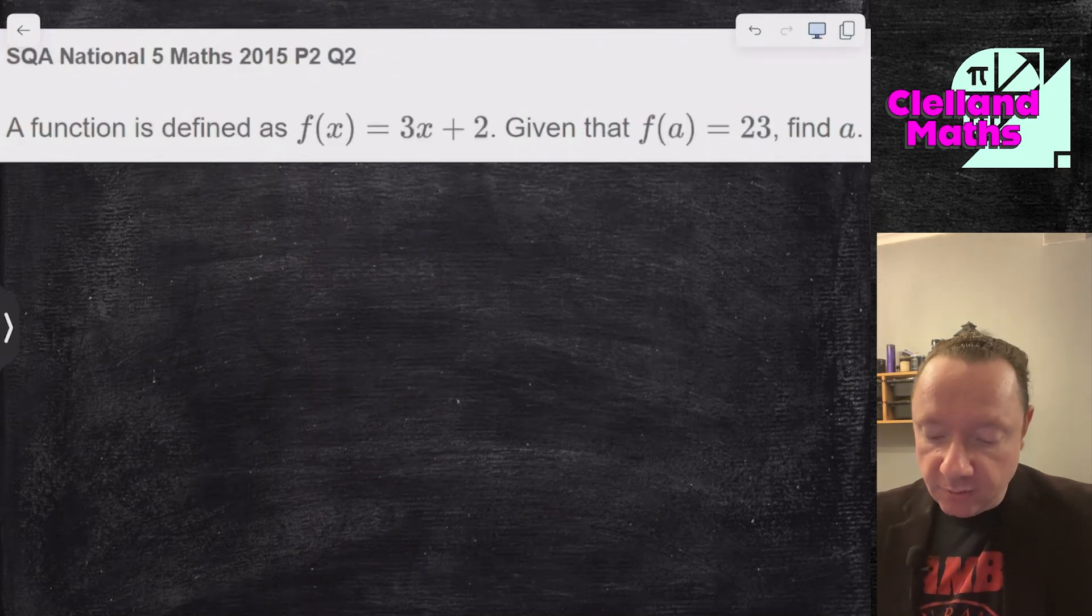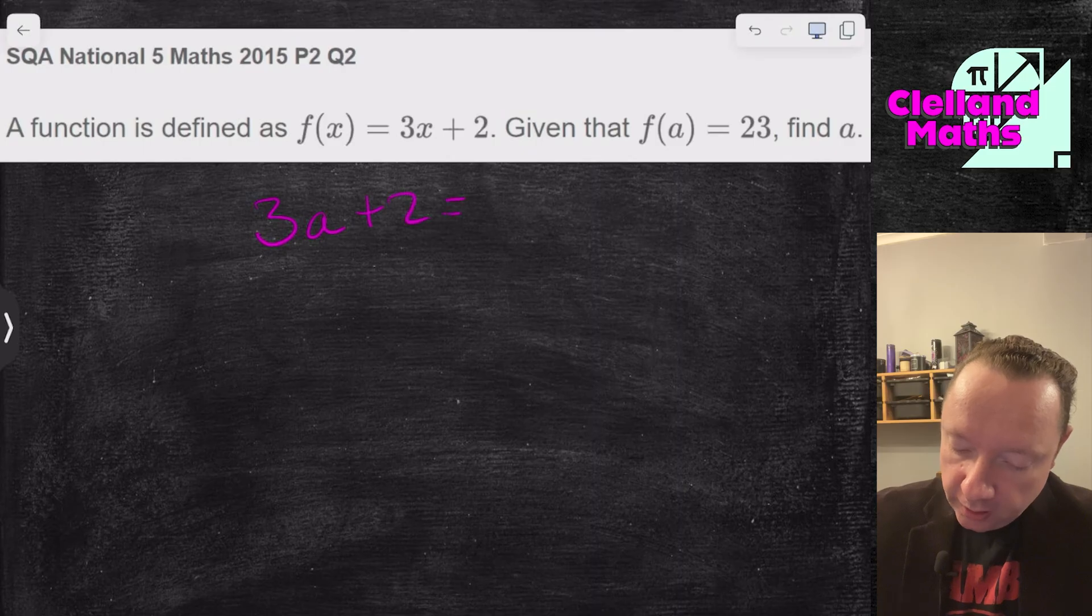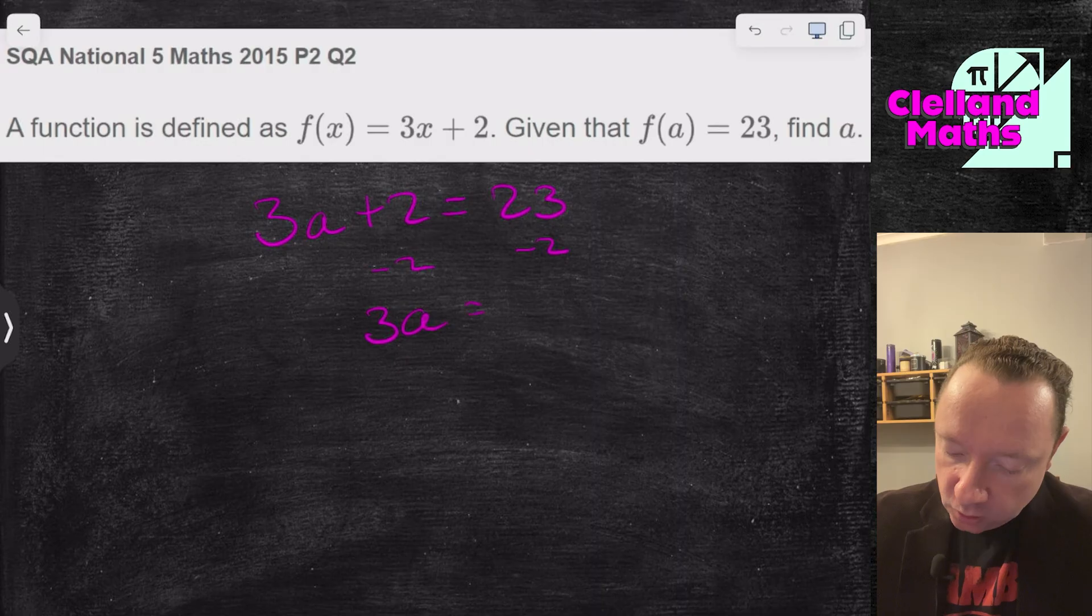Past papers on this. SQA National 5 Maths 2015 Paper 2 Question 2. f of x equals 3x plus 2. f of a equals 23. Find a. 3a plus 2 equals 23. Take away 2 from both sides. 3a is 21. Divide by 3 to get 7. And we're done there.